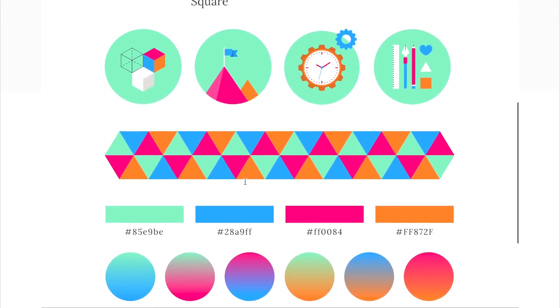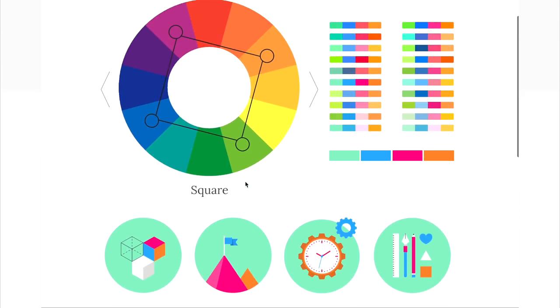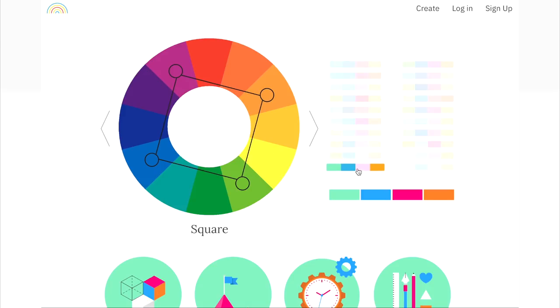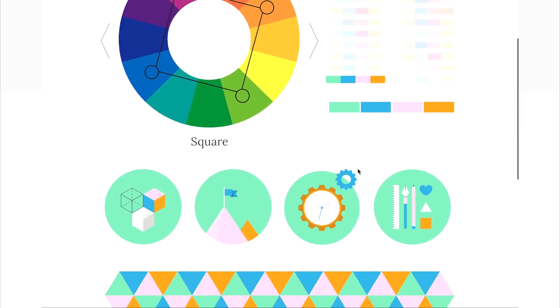Say you want to use a split complementary color, then you can just go to the website, pull out the color combination you want and get a good idea of what those colors are going to look like in a painting or an image.